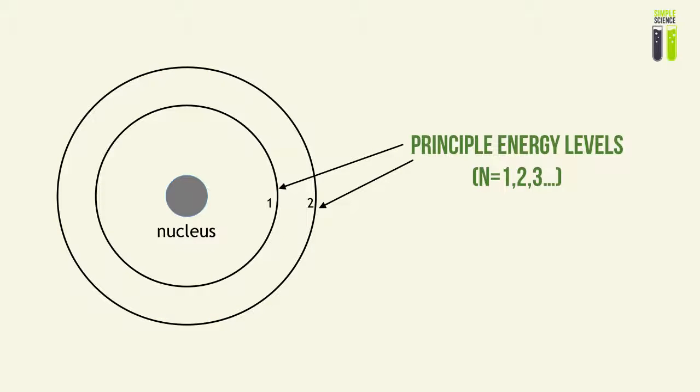The two models are similar in that both have the concept of energy levels. There will be principal energy levels 1, 2, 3, and so on. Within each principal energy level, there is a limit to the number of electrons that can occupy those levels: the first level holds 2, the second level holds 8, the third level holds 18, and so on.